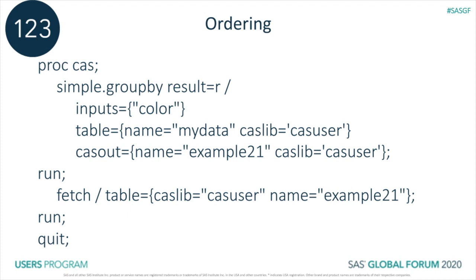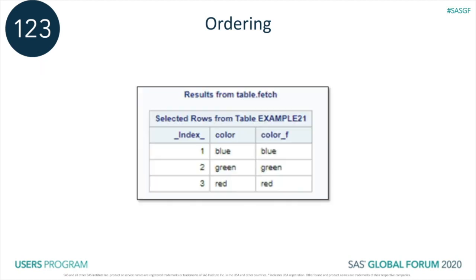In this example, I want to get a table with the unique values of color. In base SAS, I would use proc sort to do this, or maybe even a proc freq, which would order the values behind the scenes. Here, with group by, we see the inputs with color, and I'm creating an output table named example21. The fetch action is just a way for me to see the results in my results window. When I ran this code, the results came back in alphabetical order — that won't always be the case. A lot of actions accept the sort by parameter. Sort by will give the printed results in a sorted order.